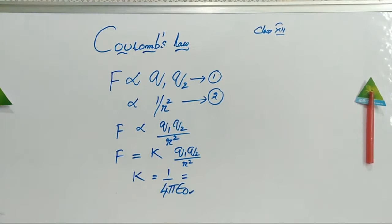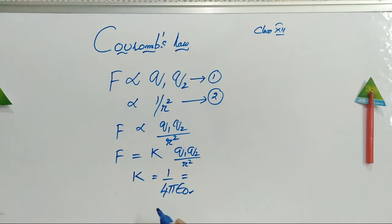Yesterday I asked you a question: who calculated the value of capital G? It is Henry Cavendish. Henry Cavendish used the torsional balance to conduct that experiment on gravitation, and he came up with the result that capital G is 6.6 into 10 to the power of minus 11. Similarly, Coulomb also used the same torsional balance method. He took spheres, gave them charge — that is, the two spheres were electrified.